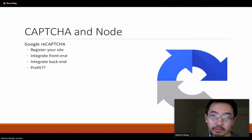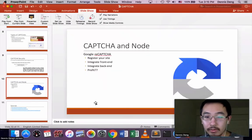Finally, we're just going to go over how to integrate CAPTCHA with an existing node application. And it's pretty simple. I use the Google reCAPTCHA API, and there are really three main steps. You just register your site, you integrate the front end, and then you integrate the back end. So I'm just going to show you a little bit of how that works.